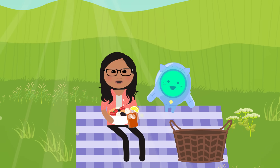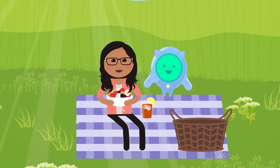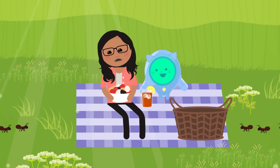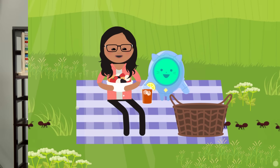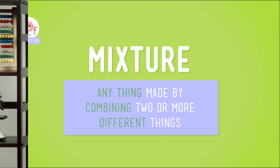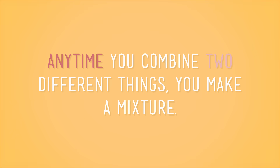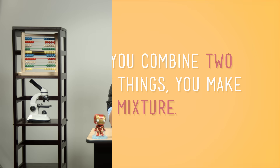Summertime is picnic time with sweet iced tea and yummy fruit salad... and ants. But still, yummy fruit salad. Did you notice something? Those foods have something in common — they're both mixtures. Things made by combining two or more different things. Not the ants, they're just ants. But the iced tea and the fruit salad are mixtures. Any time you combine two different things, you make a mixture.